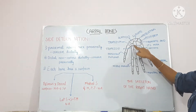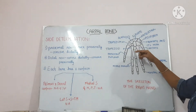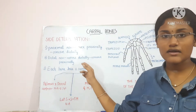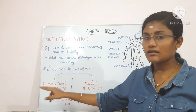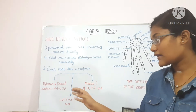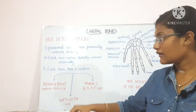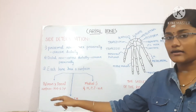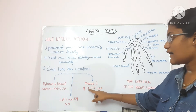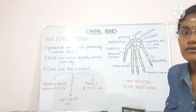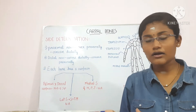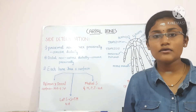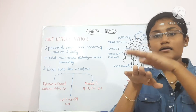The distal row includes the trapezium, trapezoid, capitate and hamate — it is convex distally and concave proximally. Each bone has six surfaces. The palmar and dorsal surfaces of all the bones are non-articular except for the triquetral and pisiform bone. The lateral surface of the lateral bones — that is the trapezium and the scaphoid — are non-articular. The medial surface of the medial bones — that is the hamate, pisiform and triquetral — are non-articular. The palmar surface non-articular part is always smaller than the dorsal surface non-articular part, with the exception of the lunate, which has the palmar surface non-articular part bigger than the dorsal surface non-articular part.